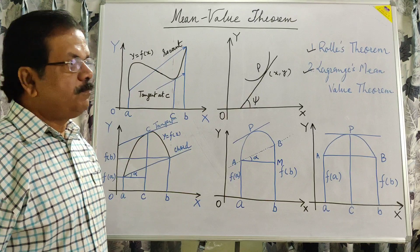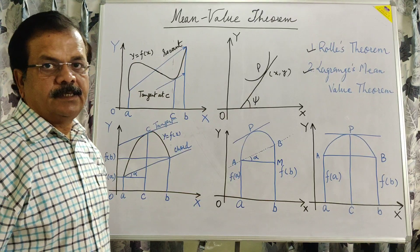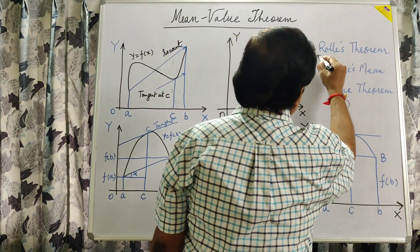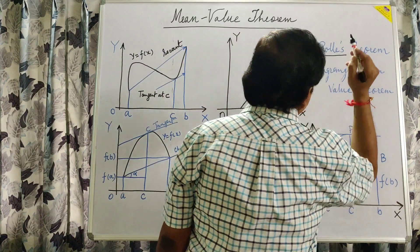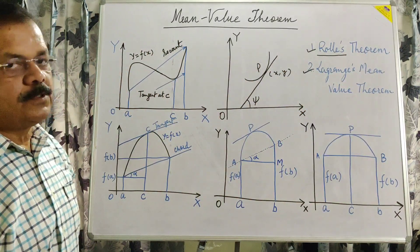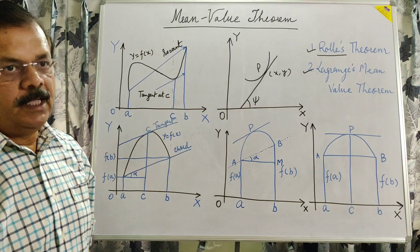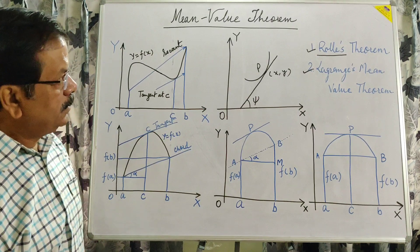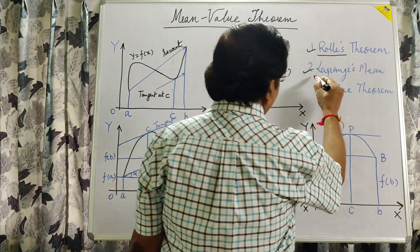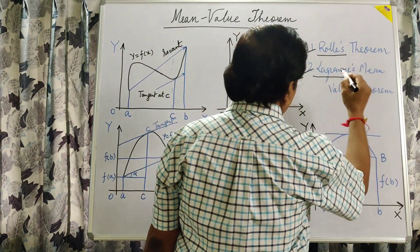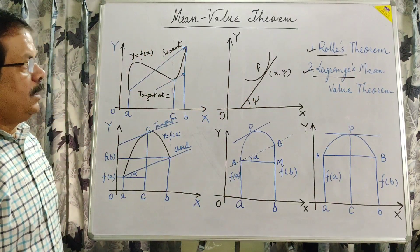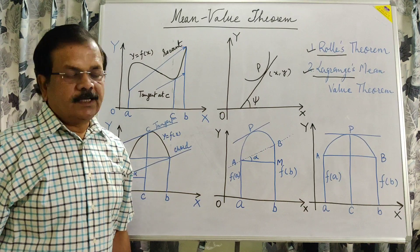Just 400-500 years after Bhaskar II, Mr. Rolle came — he was a French mathematician — and he stated Rolle's theorem. Then after him came Lagrange, who was an Italian mathematician, and he delivered Lagrange's mean value theorem.